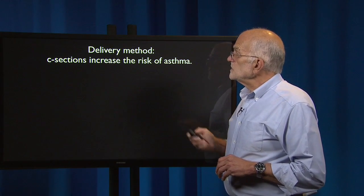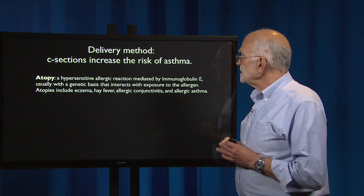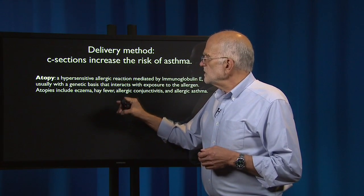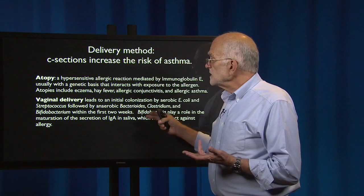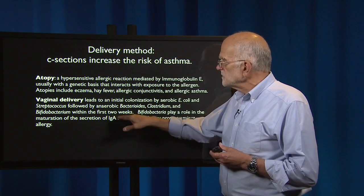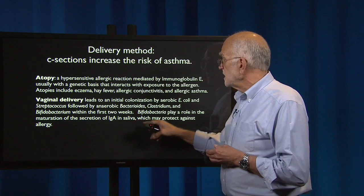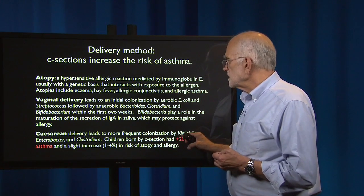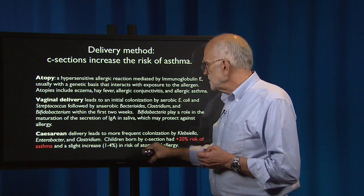We know that C-sections increase the risk of asthma. Atopy is a hypersensitive allergic reaction mediated by immunoglobulin E, usually with a genetic basis that interacts with exposure to the allergen. Atopies include eczema, hay fever, allergic conjunctivitis, and allergic asthma. Vaginal delivery leads to an initial colonization by aerobic E. coli and Streptococcus, followed by anaerobic Bacteroides, Clostridium, and Bifidobacterium within the first two weeks. Bifidobacteria play a role in the maturation of IgA secretion in saliva, which may protect against allergy. Cesarean delivery leads to more frequent colonization by Klebsiella, Enterobacter, and Clostridium. Children born by C-section had a 20% increased risk of asthma and a slight increase in risk of atopy and allergy.